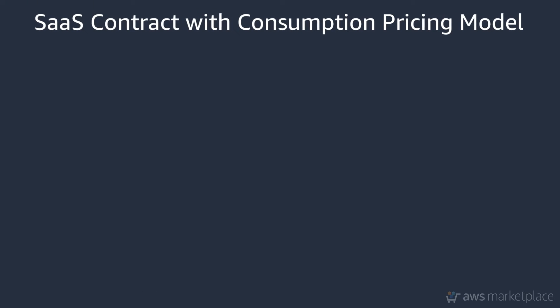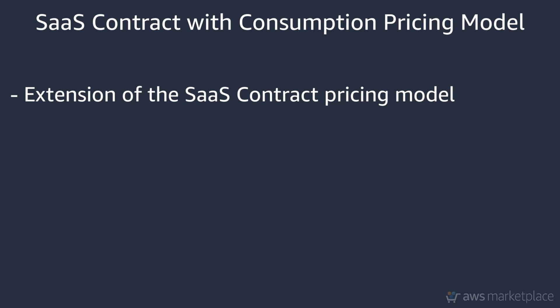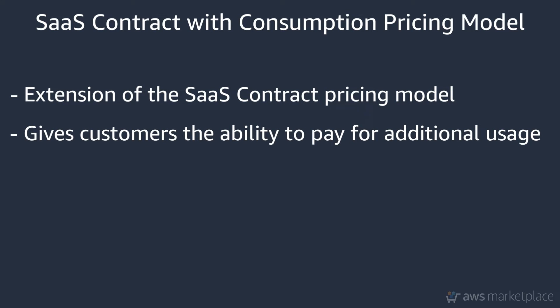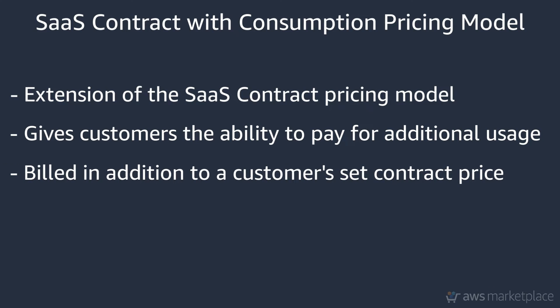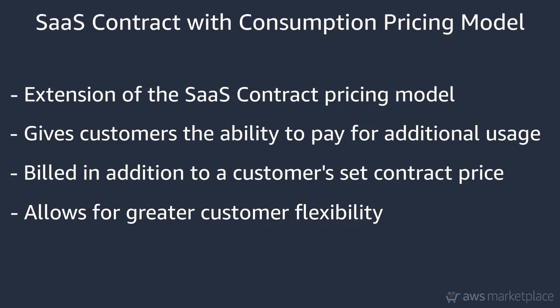Now that we've reviewed both SaaS subscription and contract pricing models, let's take a look at SaaS contract with consumption pricing. This is an extension of the SaaS contracts pricing model, giving the added ability to have your customers pay as they go for additional usage, on top of their set contract price. Contracts with consumption pricing allow customers to pre-purchase a set amount of software, but also seamlessly add and pay for more usage when they need it. All of the same concepts with SaaS contracts apply here; the difference is that you will set prices for additional usage fees.